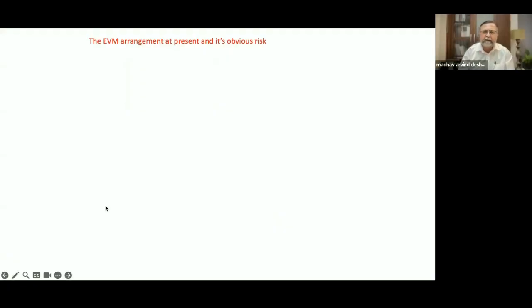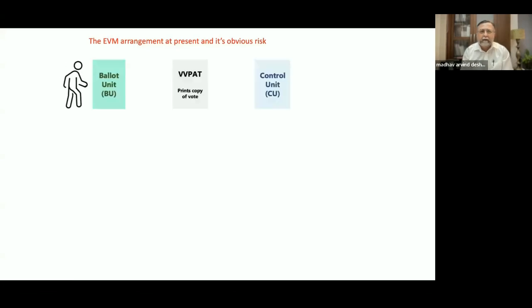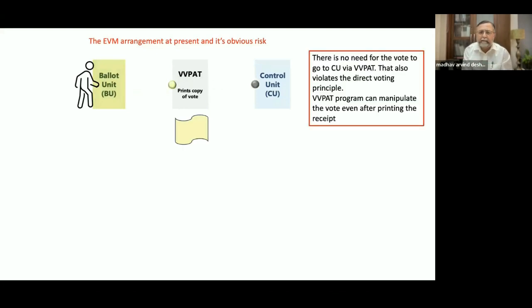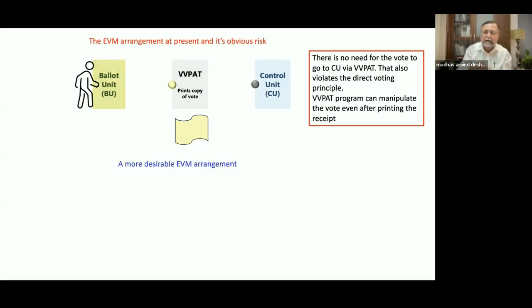I would like to show a half-minute animation — it is a very rudimentary animation, but I believe it might bring clarity to a lot of things. The arrangement at present is like this: the voter walks up to the ballot unit, decides on casting a yellow vote. The vote goes to the VVPAT. VVPAT prints a yellow slip, which the voter sees. But VVPAT may further transmit a grey vote rather than transmitting the yellow vote — that's the big problem.